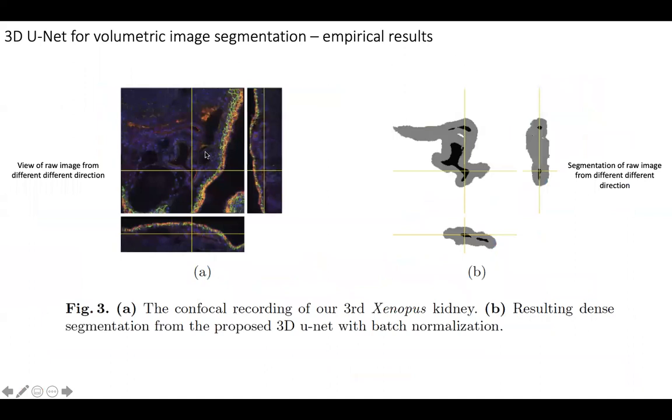Now here is a demonstration of the segmentation process. For example, for a particular raw image, we can view the whole volume from different directions. So here are the different views we get when we view this image from different directions. Similarly, here are the corresponding segmentation masks for different views of the image.